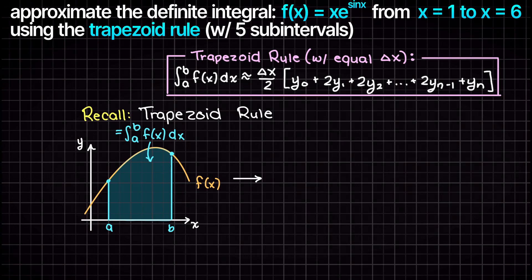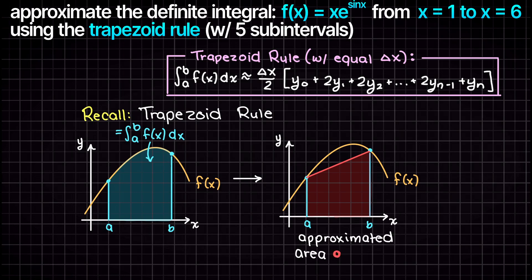Visually, this can be viewed as approximating this blue area here by chopping it up into smaller trapezoid shapes and summing them together.